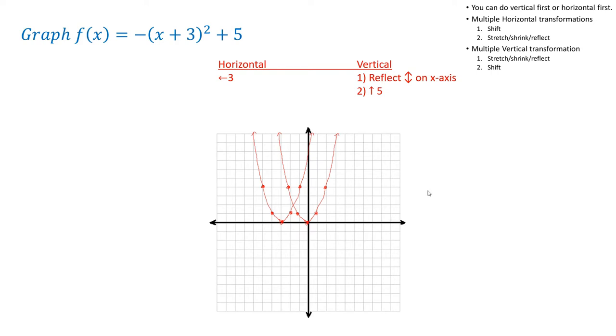Next, when it comes to vertical, remember, we have to do the stretch and shrink first. So we're going to do the reflection first, and then do the shift. Now, reflect it up and down. Now, move it up 5. There you go. That is the equation of -(x + 3)² + 5.